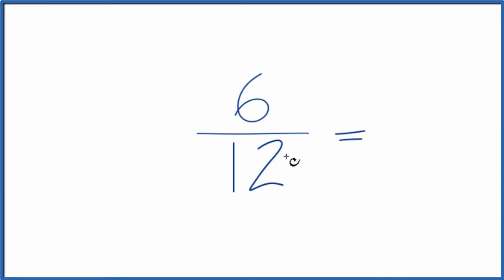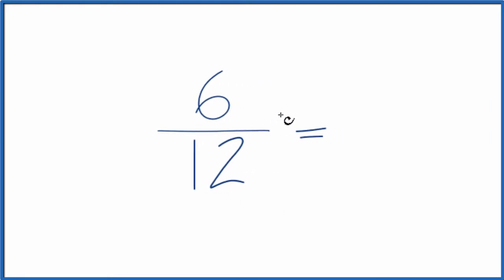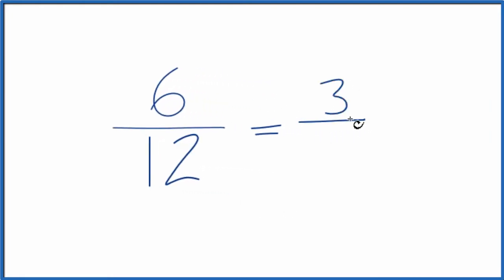So we could simplify six-twelfths. Both of these numbers are even, so six divided by two, that's three. Twelve divided by two, that's six. So three-sixths, that's an equivalent fraction for six-twelfths.